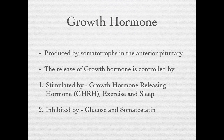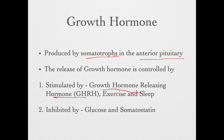Growth hormone is produced by the somatotroph cell in the anterior pituitary. There is a built-in mechanism to ensure normal growth hormone release. Stimulation is done by growth hormone releasing hormone, exercise, and sleep. Growth hormone release is inhibited by glucose and somatostatin. A good way to remember this is: to grow you need good sleep and exercise and shouldn't have too much sugar.